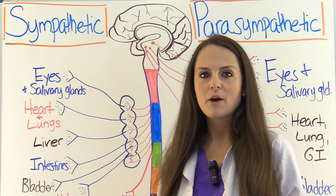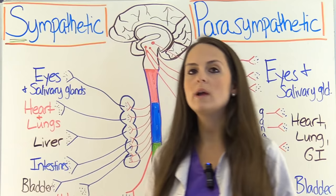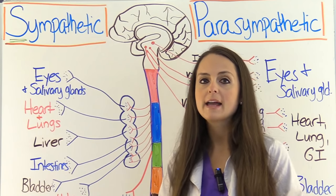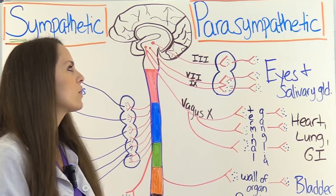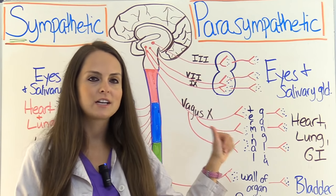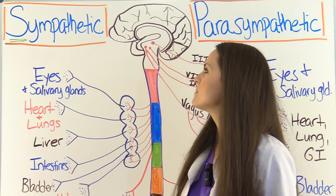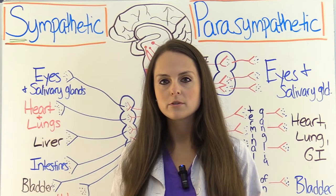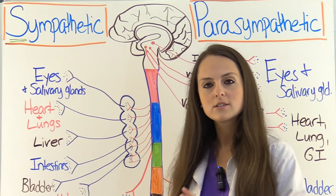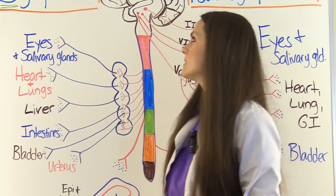First let's look at our sympathetic nervous system. This system is responsible for stress — how we respond to stress. It's known as fight or flight, compared to the parasympathetic, which is known as rest and digest. The parasympathetic system cares about your ability to digest food, reproduce, and take it easy on your body. The sympathetic system cares about your survival, getting you out of danger, and preserving your life.